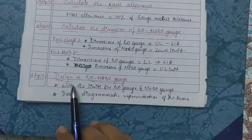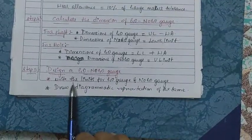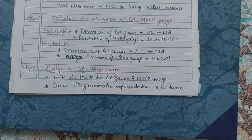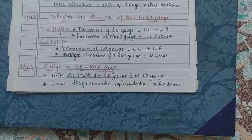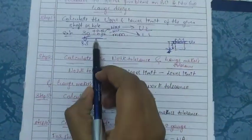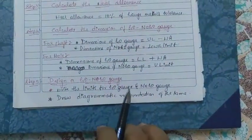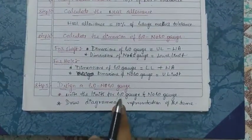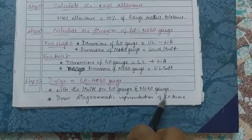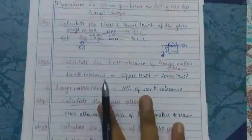The last step, Step 5, is to design the go and no-go gauges. First, write the limits for both gauges: what is the go gauge size, its tolerance, and its limits; then the no-go gauge size, its tolerance, and its limits. After writing these two, draw the diametric representation of the same. This is the overall stepwise procedure to solve go and no-go gauge design problems.